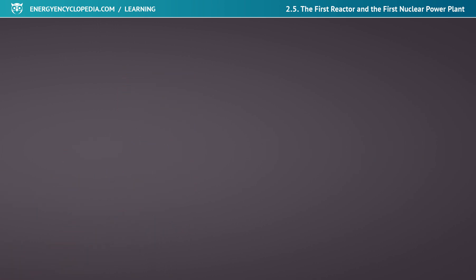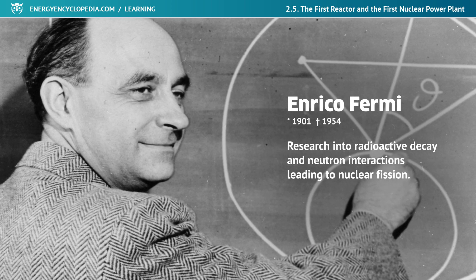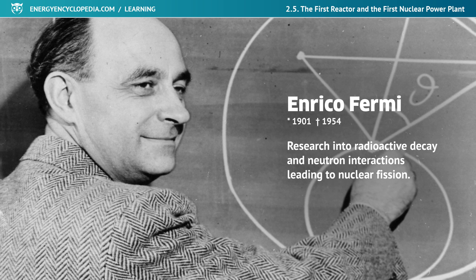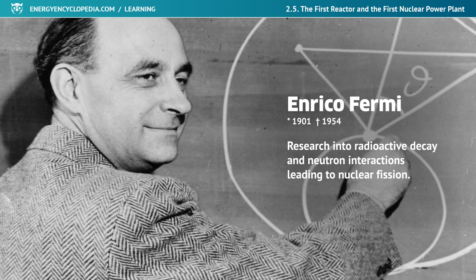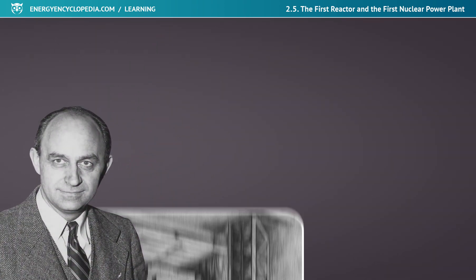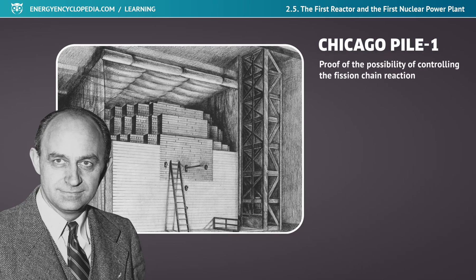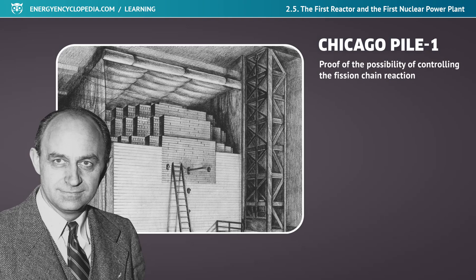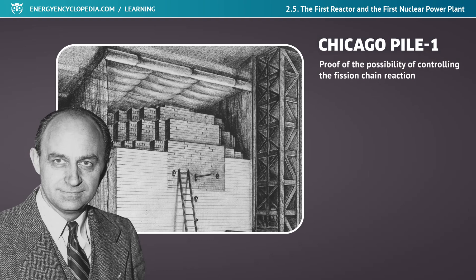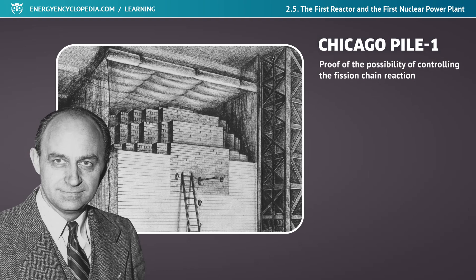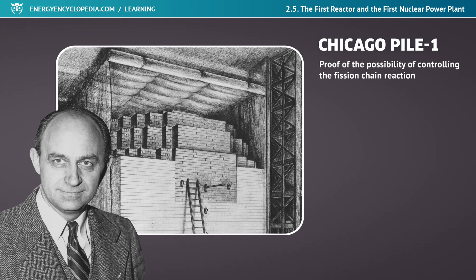In the 1930s and 1940s, the Italian physicist Enrico Fermi, a Nobel Prize winner and a significant figure in the Manhattan Project in the USA, was intensively involved in the research of radioactive decay and neutron interactions leading to nuclear fission. The first nuclear reactor using a controlled fission reaction was built by Enrico Fermi and a team of collaborators in 1942 under the West Stands of the University of Chicago's Stagg Field Football Stadium. The reactor was called the Chicago Pile No. 1, and its goal was to prove the possibility of controlling the fission chain reaction in uranium fuel and to experimentally verify the calculations of the initial design of the reactor.